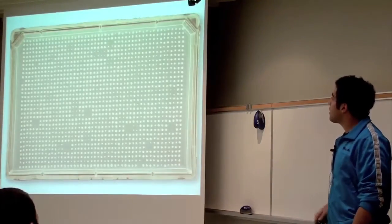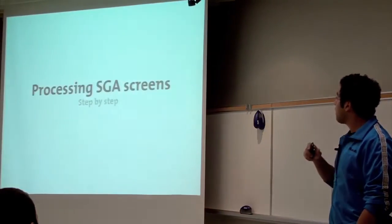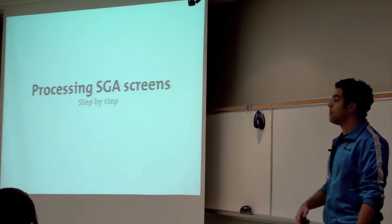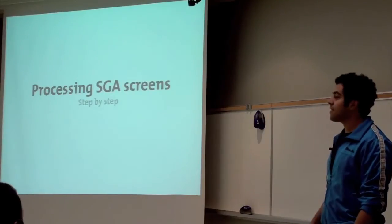And once you see this deviation from what you'd expect, you'd call it what people call a genetic interaction. And so typically you get back a screen like this. And they have the trouble of processing these images. They have these images and they don't know what to do with them.